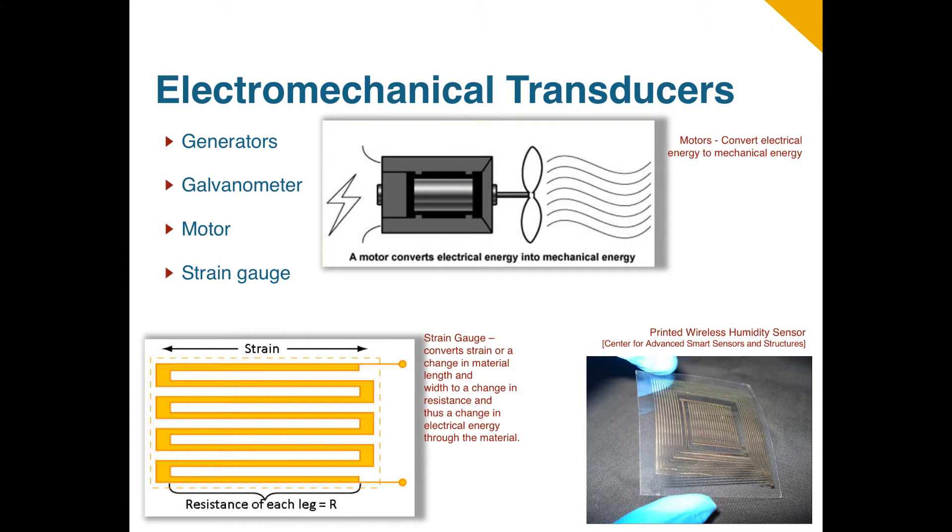Strain gauges are mechanical transducers found in many MEMS components. A strain gauge converts the deformation, including the stress or strain of a material, into a change in the material's electrical resistance, and thus a change in current flowing through the material. Referring to the strain gauge on the bottom left, each leg of the gauge has a resistance, determined primarily by the material itself. As the gauge stretches or is strained, the legs get longer, increasing the resistance in each leg, and thus the overall resistance of the gauge.